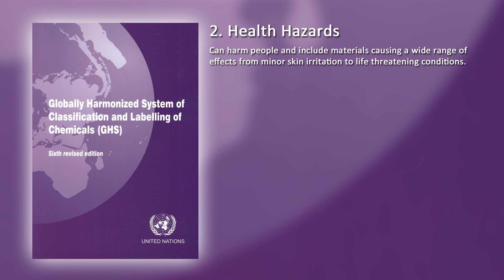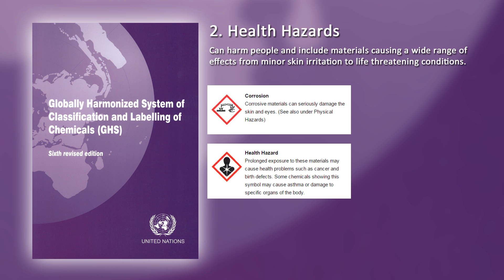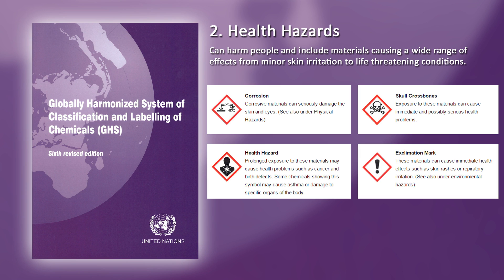Number 2: Health hazards. Exposure can harm people, and includes materials causing a wide range of effects from minor skin irritation to life-threatening conditions. Symbols in this category include Corrosion: corrosive materials can seriously damage the skin and eyes. Health hazard: prolonged exposure to these materials may cause health problems such as cancer and birth defects. Some chemicals showing this symbol may cause asthma or damage to specific organs of the body. Skull and crossbones: exposure to these materials can cause immediate and possibly serious health problems. Exclamation mark: these materials can cause immediate health effects such as skin rashes or airway irritation.